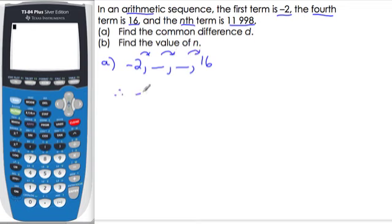Therefore negative 2 plus 3 times the common difference d will equal 16. Add 2 to both sides, 3d equals 18, divide both sides by 3, d equals 6, completing part (a). So the common difference is 6.